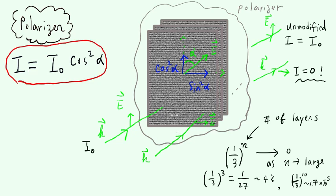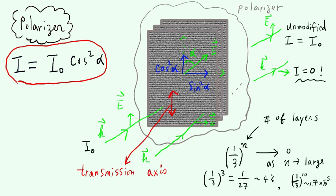So that's how a polarizer works. The vertical direction here is the transmission axis. Notice that the transmission axis is perpendicular to the actual directions of these little molecular antennas. That's sometimes a confusing point, but it's something you have to learn.